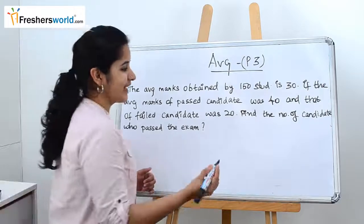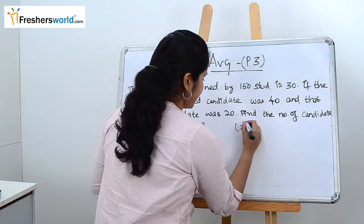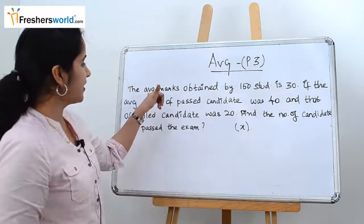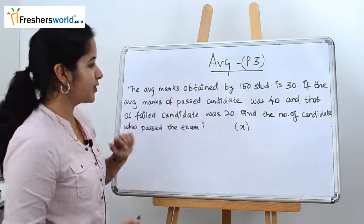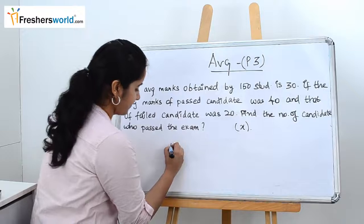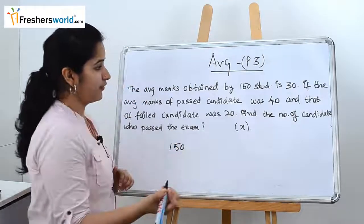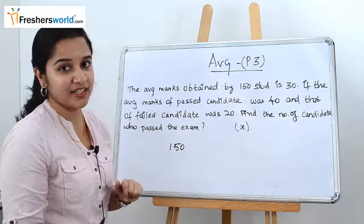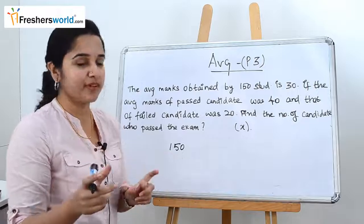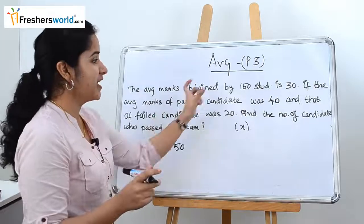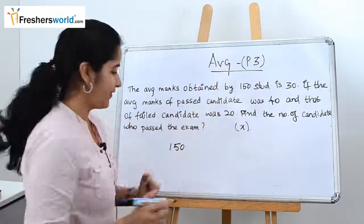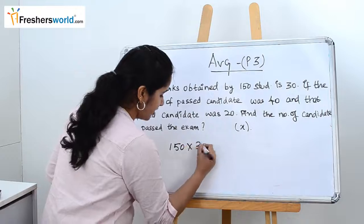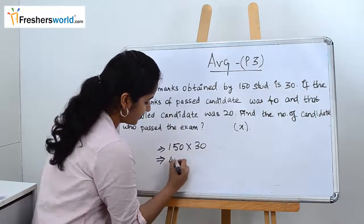So let's take the number of candidates as x. First, what they have given: total number of students is 150 and their average marks is 30. To find the overall total marks, we should multiply the number of students by the average. So 150 into 30 is nothing but 4500.